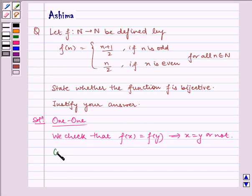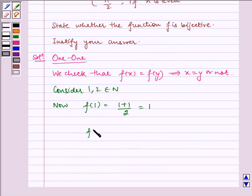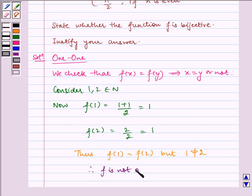Consider 1, 2 belongs to N. Now f(1) equals (1+1)/2 which equals 1, and f(2) equals 2/2 which equals 1. Thus f(1) equals f(2) but 1 is not equal to 2. Therefore f is not one-one.